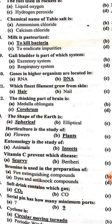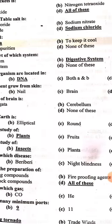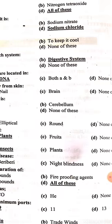Horticulture is the study of plants. Entomology is the study of insects. Vitamin C prevents the disease scurvy.